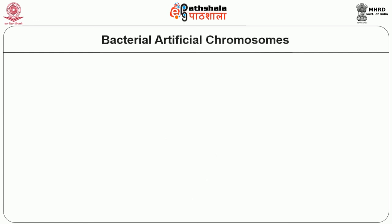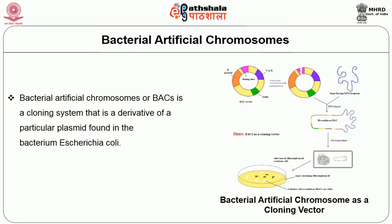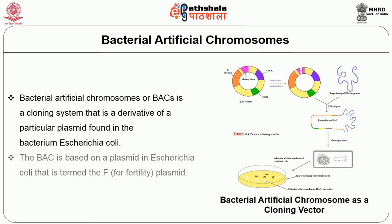Coming to bacterial artificial chromosomes: it is a cloning system that is a derivative of a particular plasmid found in E. coli. The BAC is based on a plasmid in E. coli termed the F factor — or fertility plasmid.